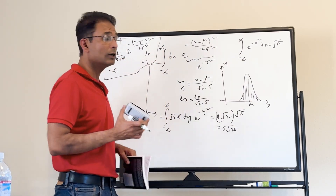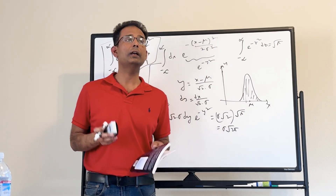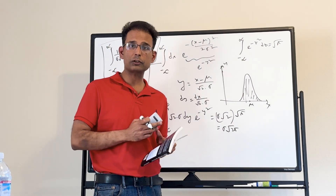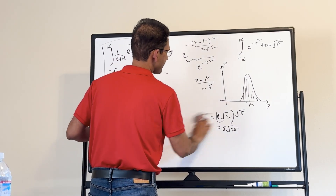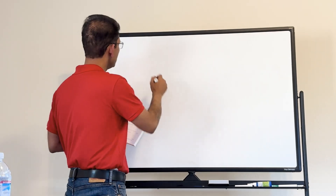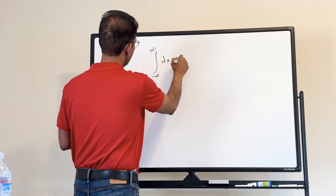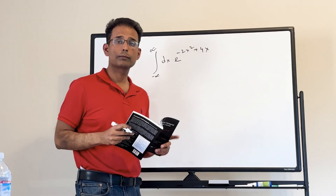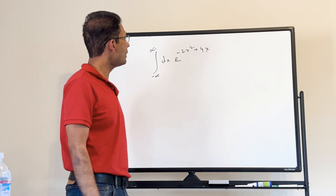Let's do one more problem. Feynman's path integral uses Gaussian integrals a lot, so these examples will be very important for this book. The integral we will do now is: minus infinity to plus infinity of e to the minus 2x squared plus 4x dx. We have a quadratic expression in the exponent.